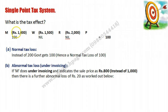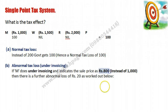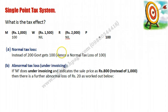Since only the first stage is taxed and there is no tax at other stages, the manufacturer can manipulate the invoice — under-invoice. For example, if the actual sale is at Rs. 1000 but the invoice is issued at Rs. 800, then the tax comes to Rs. 80. So there will be an abnormal loss of Rs. 20 to the government in this system.